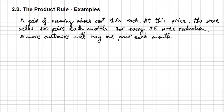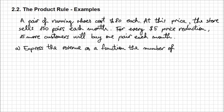This is basically what we know. The first thing that we need to do is to express the revenue as a function of the number of $5 price reductions, and we're going to denote that with n. We have to determine the function — we don't have it yet, we need to determine it.